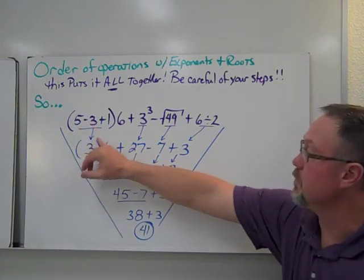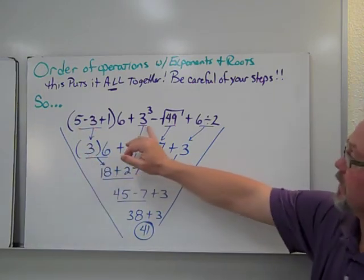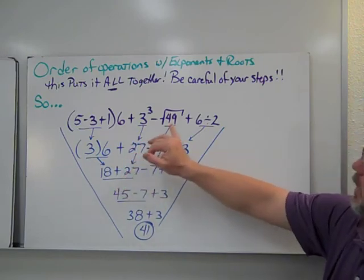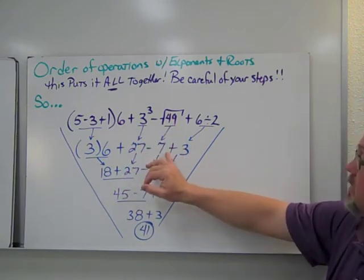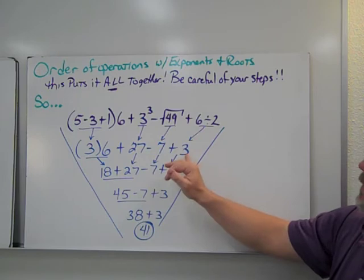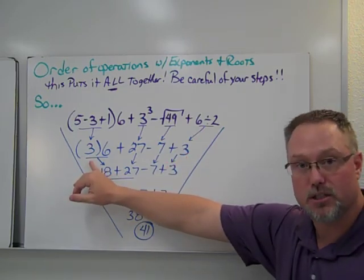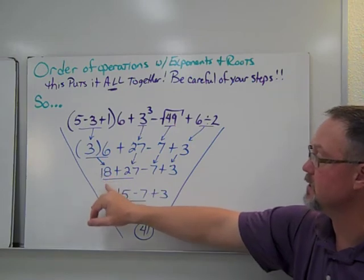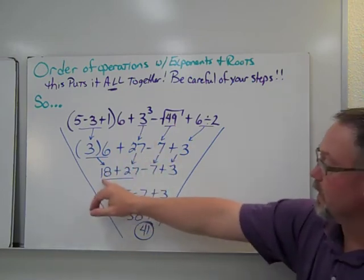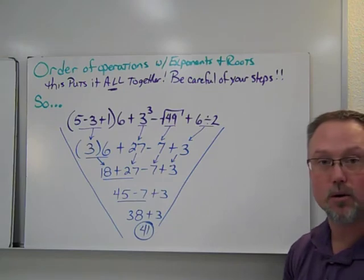So if we take 5 minus 3 plus 1, I get 3. If I cube 3, I get 27. If I take the square root of 49, I get 7. And if I take 6 divided by 2, I get 3. From here, I would have to multiply and finish up the multiplication part of this. So 6 times 3 is 18. And then I just bring everything down.